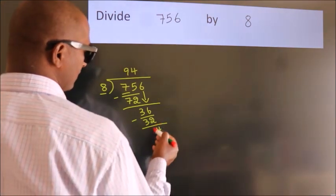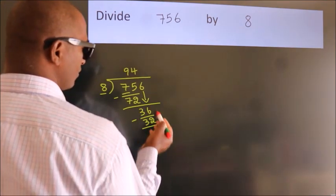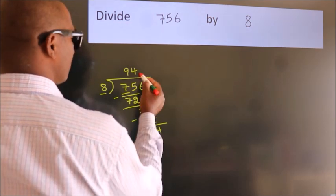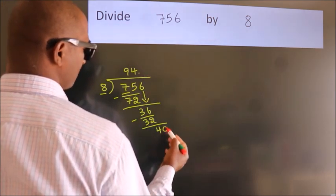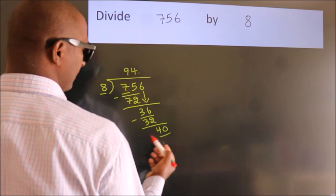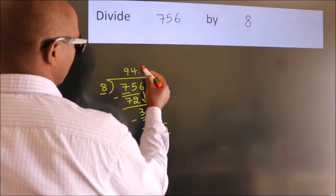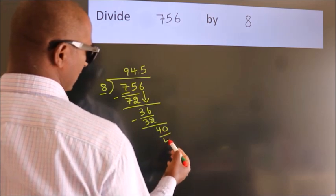After this, no more numbers to bring it down. So, what we do is, we put dot take 0. So, 40. When do we get 40? In 8 table. 8 5s, 40.